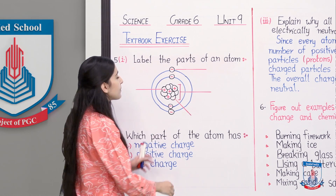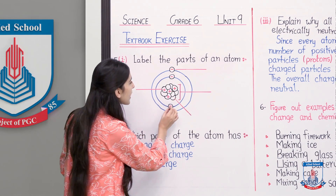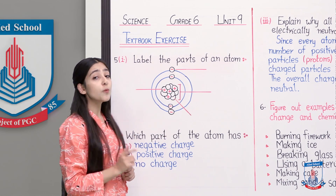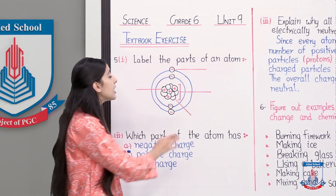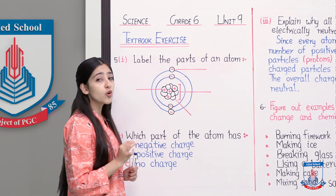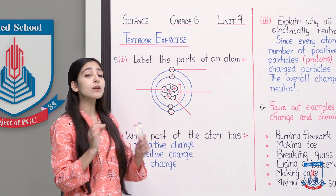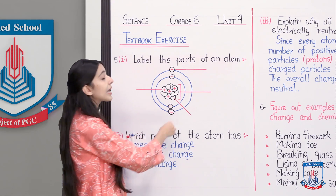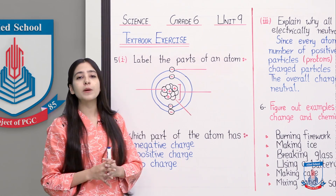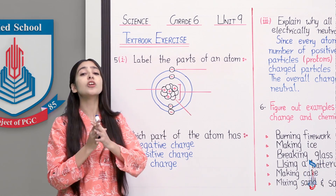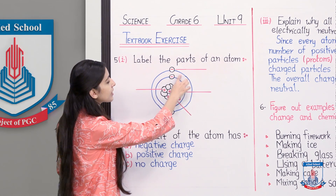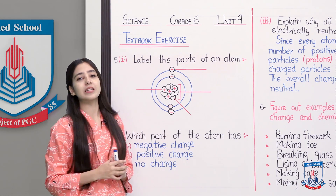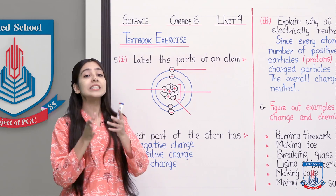So number one - you can see that in the middle we have a cluster of particles, and particles are revolving around it in this manner. The central part of the atom is called the nucleus. The nucleus is the absolute center of the atom, while these round shapes I have drawn around it - we call them orbits. Electrons travel in these orbits around the nucleus.